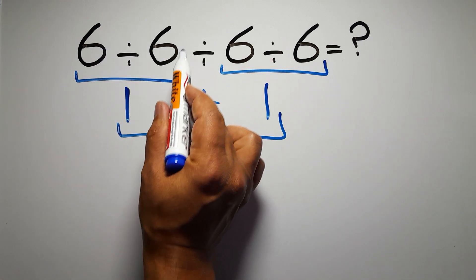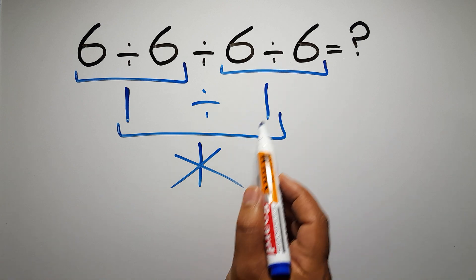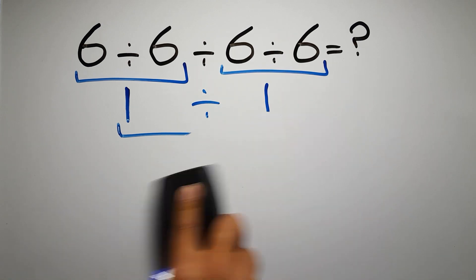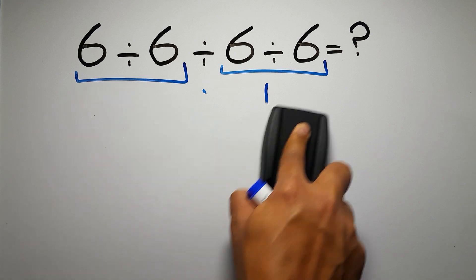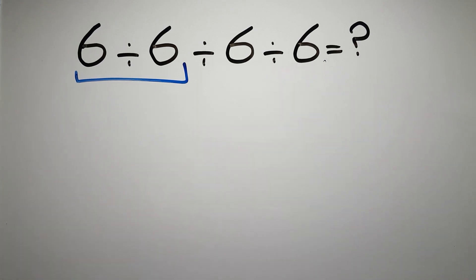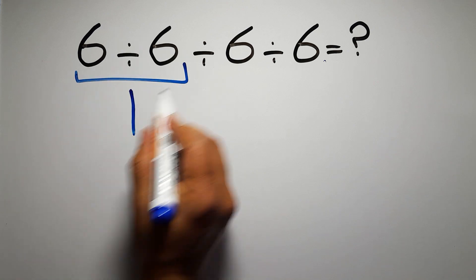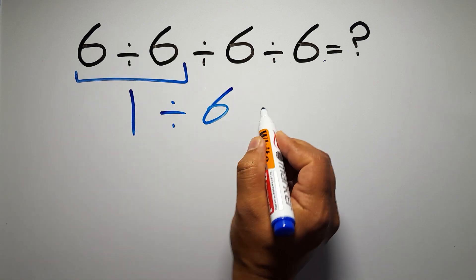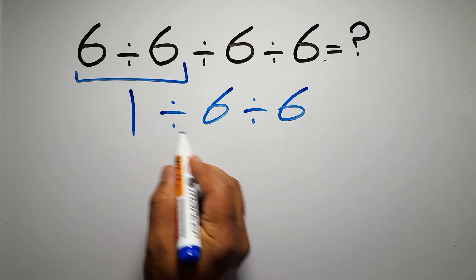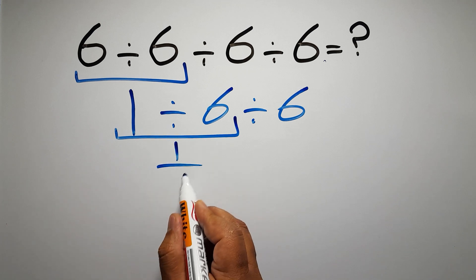So here, first we have to do this division, then this division, and finally this division. If we do a later division before an earlier one, it is wrong. So first: 6 divided by 6 gives us 1, so we have 1 divided by 6, and again divided by 6.